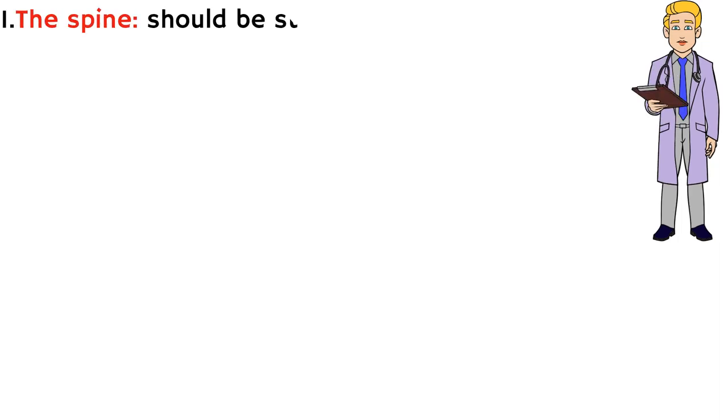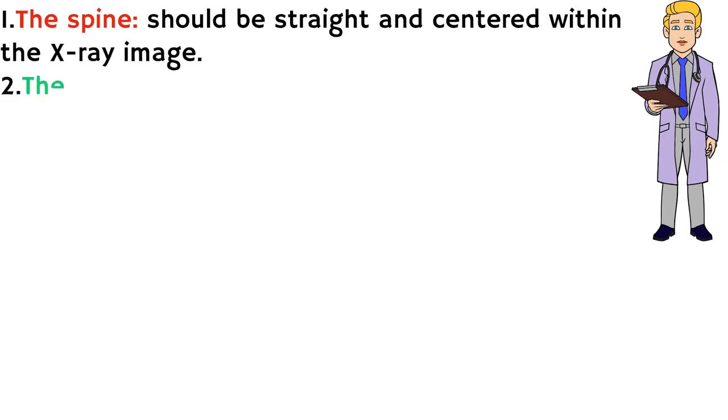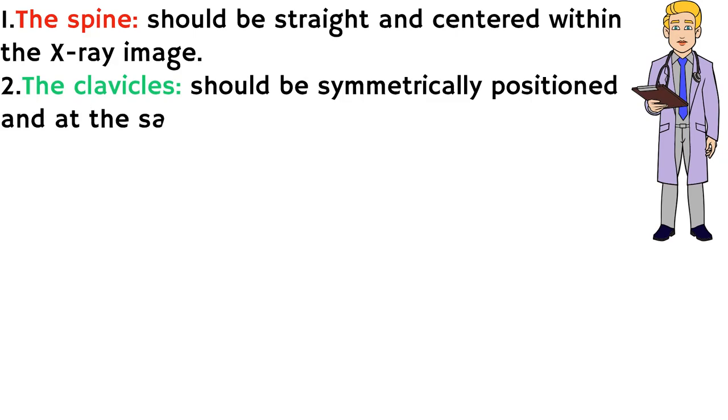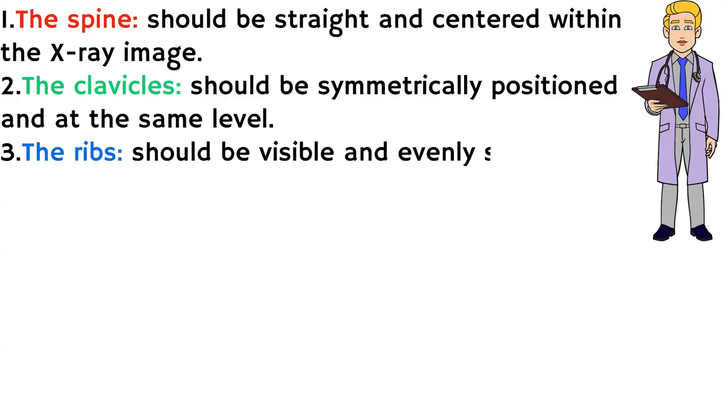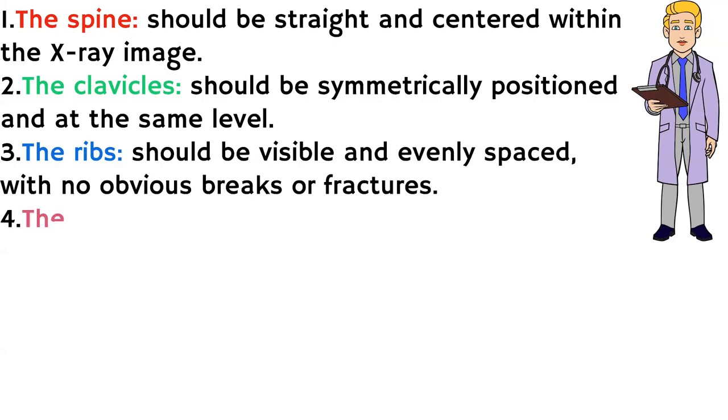1. The spine should be straight and centered within the x-ray image. 2. The clavicles should be symmetrically positioned and at the same level. 3. The ribs should be visible and evenly spaced, with no obvious breaks or fractures.